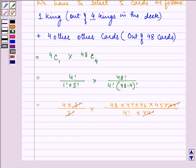Further, 4 multiplied by 48 into 47 into 46 into 45, and 4 factorial can be written as 4 into 3 into 2 into 1.